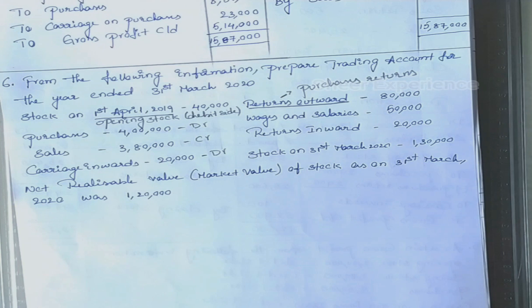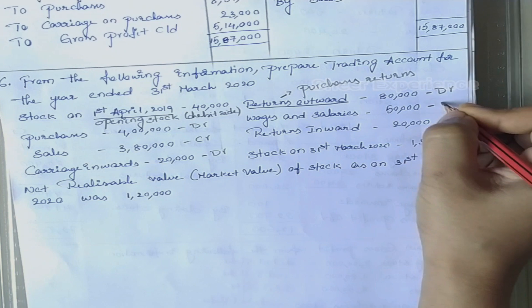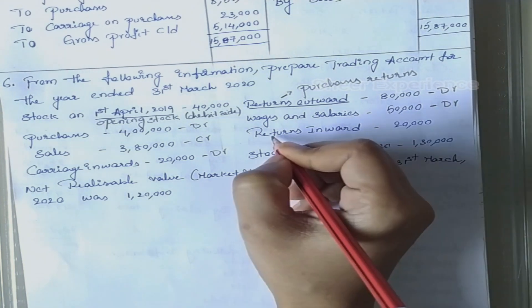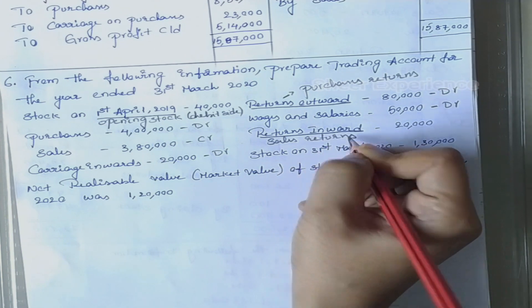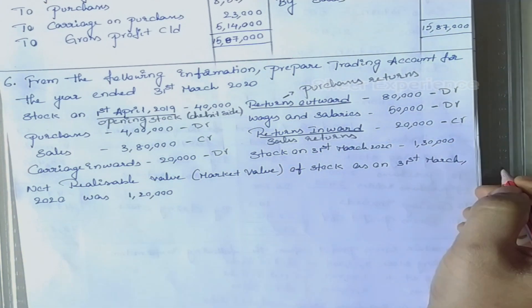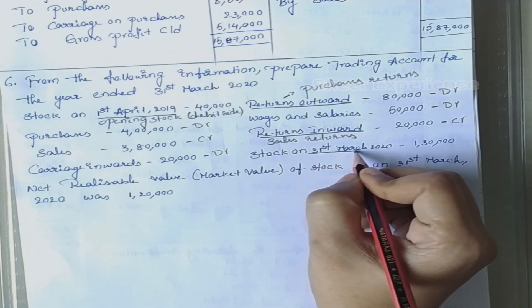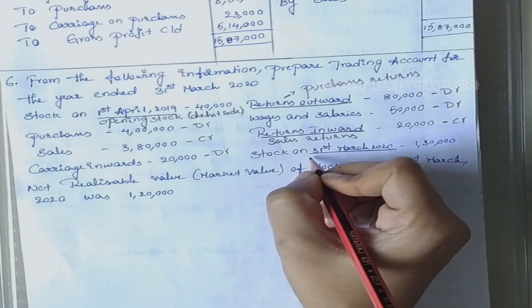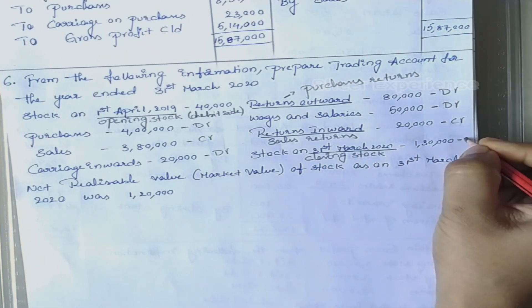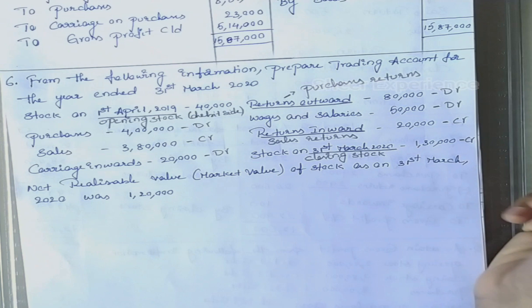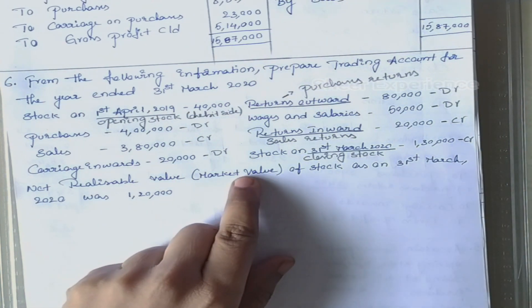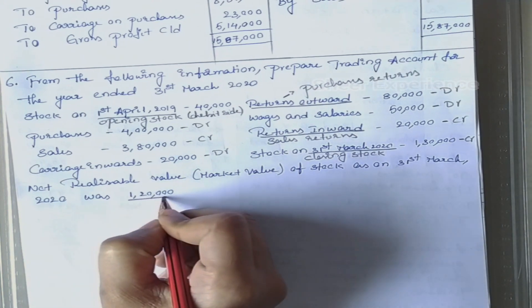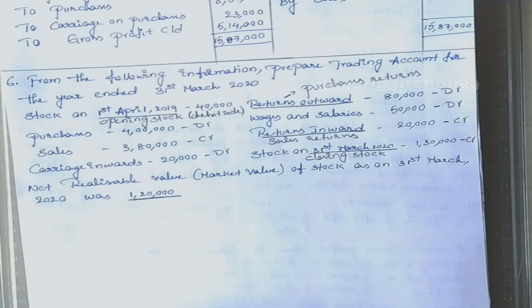We also have returns inwards, which is nothing but sales returns — this we will mention on the credit side. Stock on 31st March 2020 is the closing stock because the date is the month end. We also have a note that the net realizable value or market value of stock as on 31st March 2020 was 1,20,000.